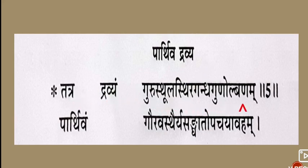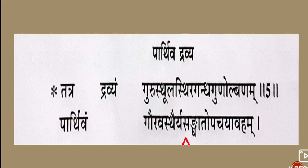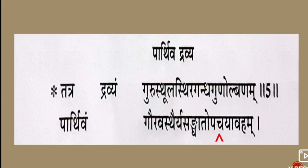The properties of Parthiv Drava include calmness and patience — such qualities are developed by Parthiv Drava. Sanghat means that for fractures of the bone, the jointing and healing of those fractures is done by Parthiv Drava. Upachaya means that for metabolism — both catabolism and anabolism — the production of glucose and glycogen are supported by Parthiv Drava.